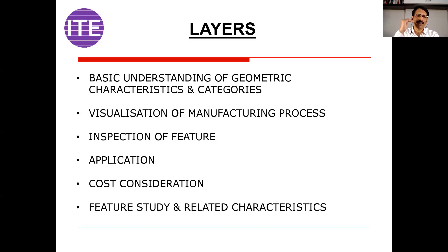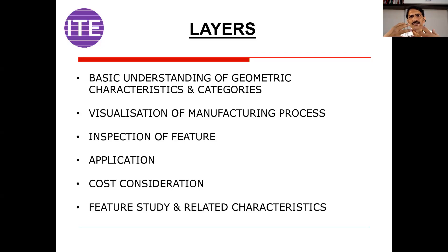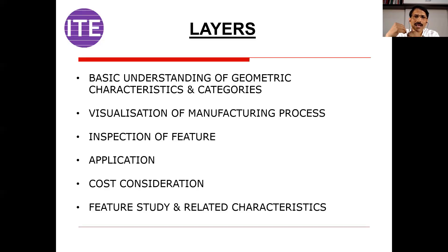The highest level of GD&T is feature study and related characteristics. There are only two types of features for any object: projected features and cavity features. Projected features include a boss, rib, or pad. Cavity features include a pocket, groove, or slot. When you see or visualize a particular feature on a machine component, you should correlate it with the appropriate GD&T characteristic to achieve the desired result. That is the highest level of GD&T understanding.